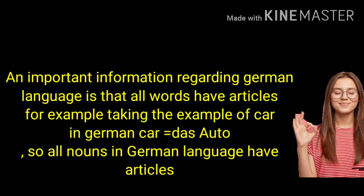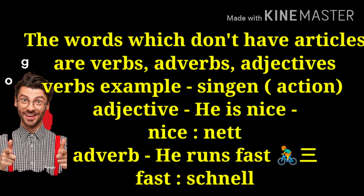All nouns in German have articles. The words which don't have articles are verbs, adverbs, and adjectives. Examples of verbs are: 'singen,' which means 'to sing.' Verbs are words that denote action — like 'singen' and 'tanzen.' These words don't have articles.